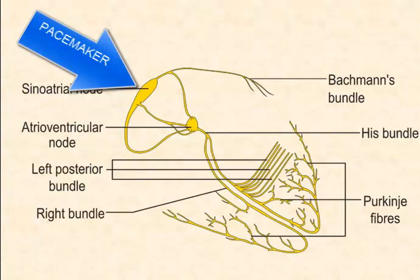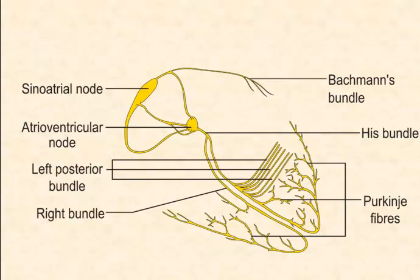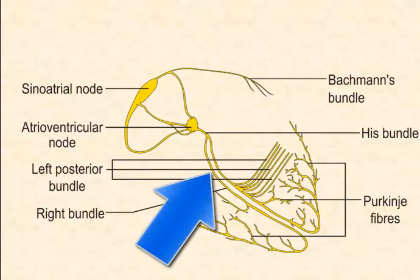The electrical signal passes from the sinoatrial node to the atrioventricular node, and as it does so, the impulses cause the atria to contract. The AV node then delays the impulse slightly, allowing the ventricles to fill. The electrical impulse then moves through the septum via the bundle of His and into branches, which cause the ventricles to contract.